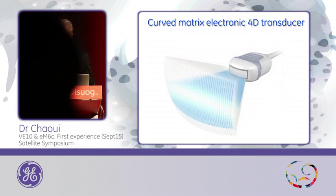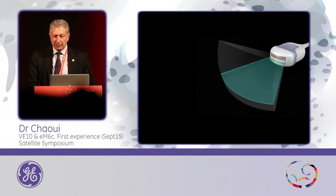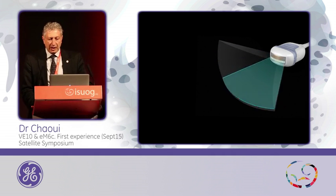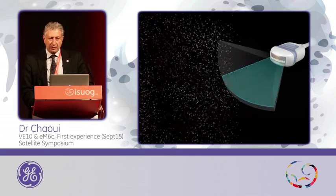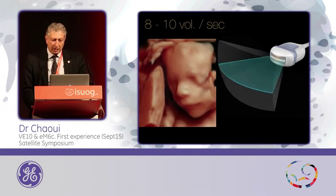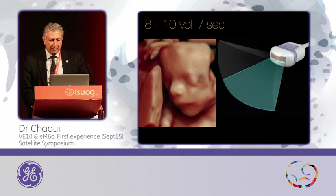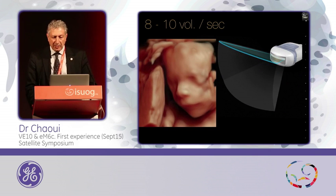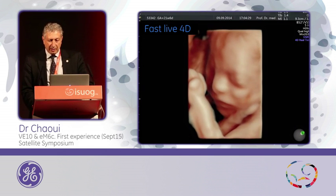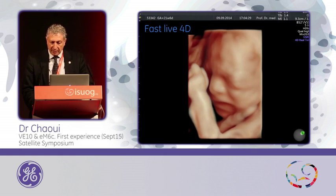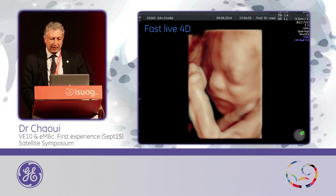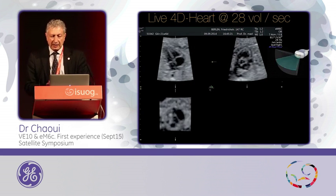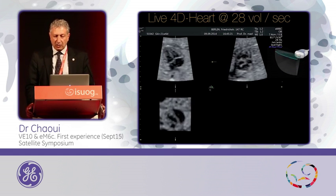If you have a system with not mechanical but electronic 4D, the first thing you will think about is fetal movements. And very soon you realize these are really very quick images you can acquire, like with a larger volume of the fetal face and baby moving — you will get between 7 and 10 volumes per second easily. You can also increase the resolution to see some details of the fetus. And the first thing I did was check the heart — here at 28 volumes per second.